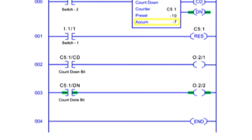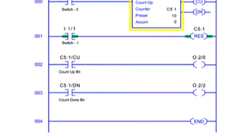After the accumulated value reaches the preset value, the counter instruction done, or DN, control bit is enabled. The accumulated count is retained until cleared by the reset instruction addressed the same as the CTU file.